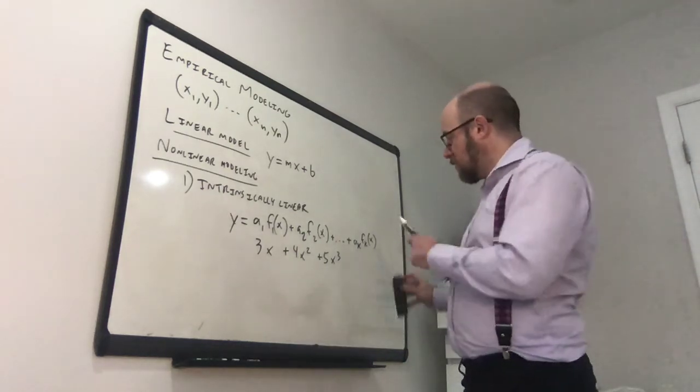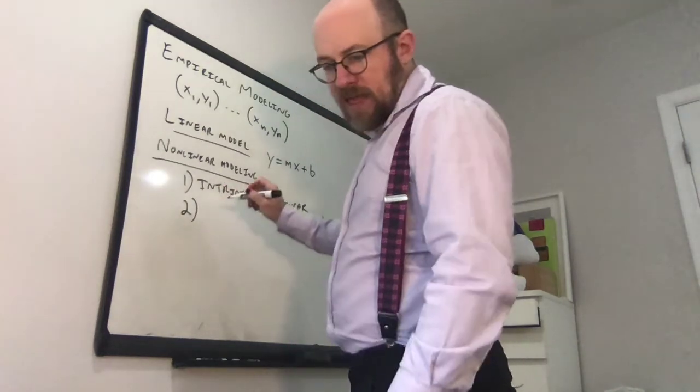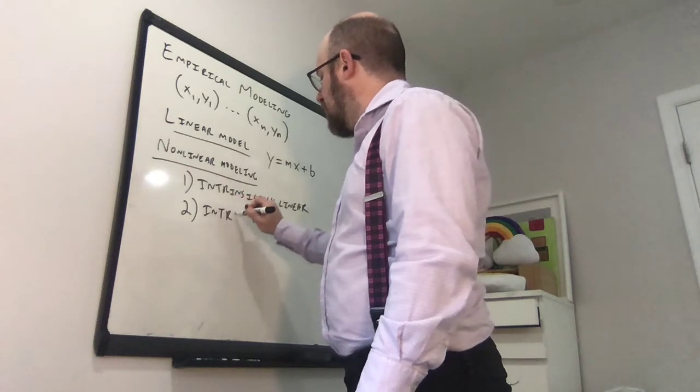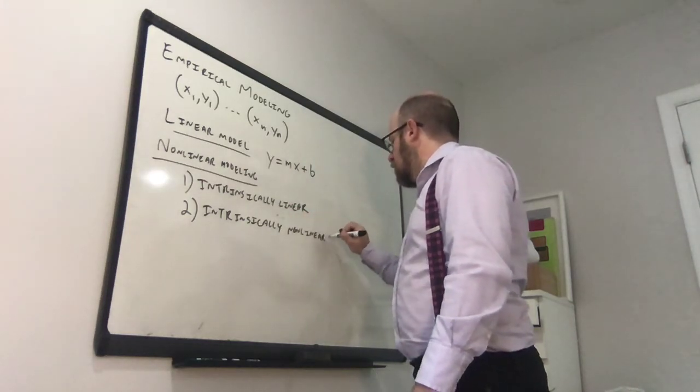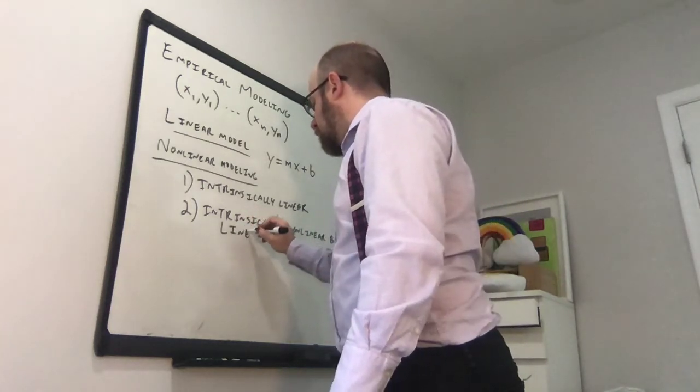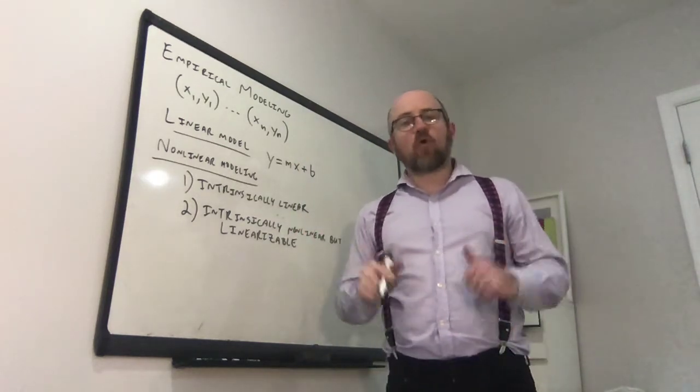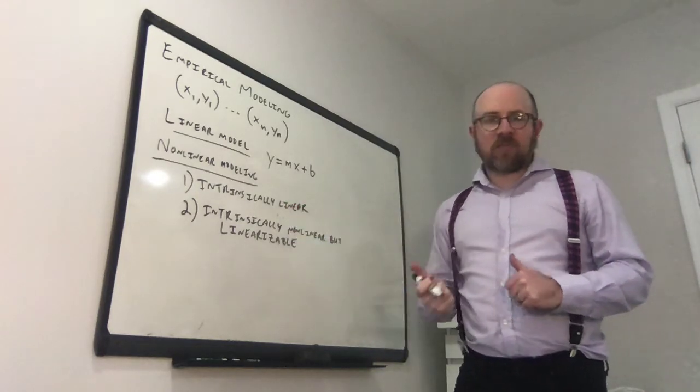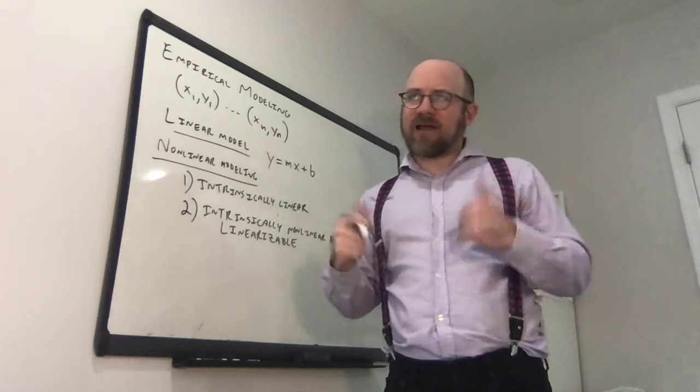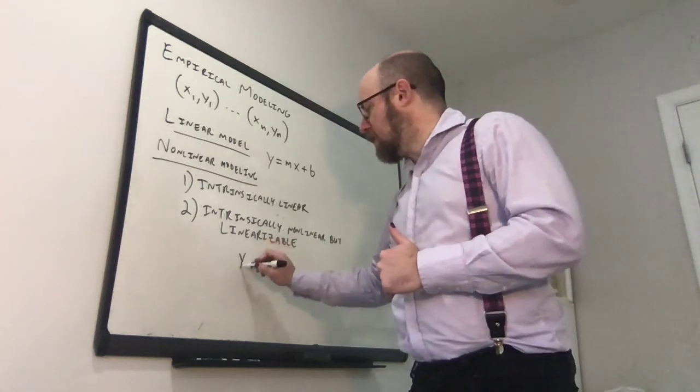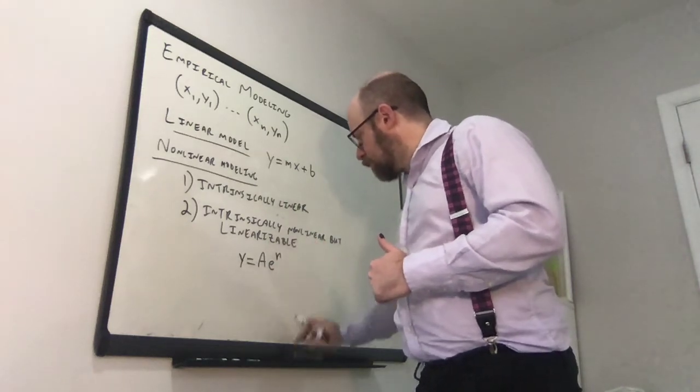The next one that we're going to be interested in is what are called intrinsically nonlinear but linearizable. And so these are models that can be transformed into something intrinsically linear. Usually using logarithms are going to be our most common tool, but with square roots sometimes you can linearize things. So an example of this would be something like y equals a times e to the rx, right? This is a nonlinear function.